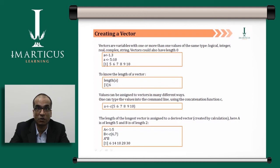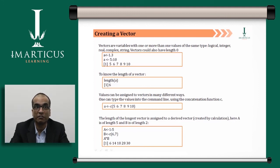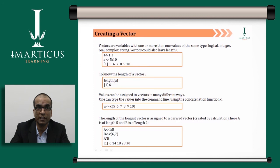Note that capital A and small a are two different variables in R — R is case-sensitive. So A <- 1:5 creates a vector A with values 1 through 5. B <- c(6, 7) creates a vector with only two elements. When you multiply A * B, something called vector recycling occurs: the longer vector stays as-is, while the shorter vector is recycled to match the longer vector's length.